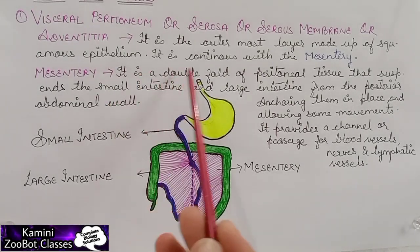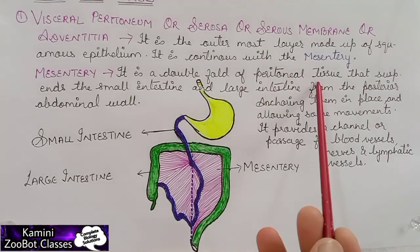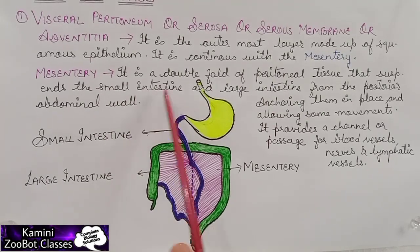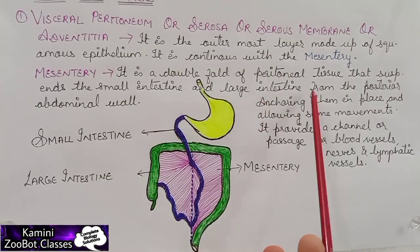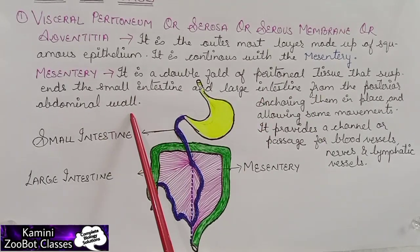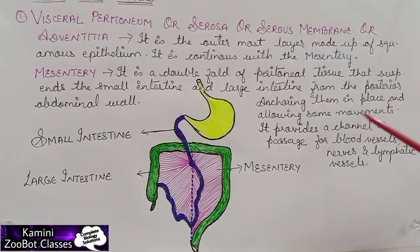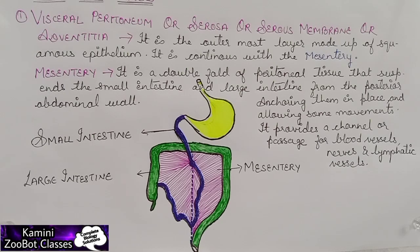Mesentery is a double fold of peritoneal tissue that suspends the small intestine and large intestine from the posterior abdominal wall. It helps to anchor them in place while allowing some movement. It also provides a channel or passage for blood vessels, nerves, and lymphatic vessels.